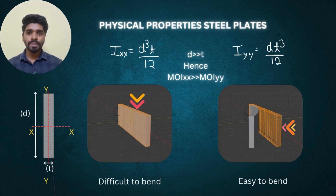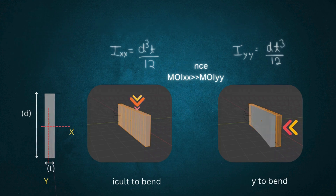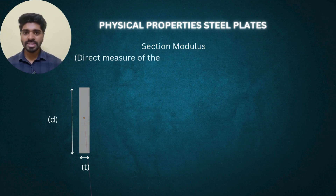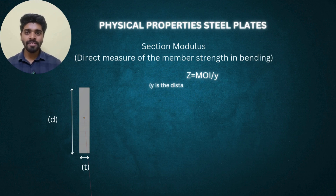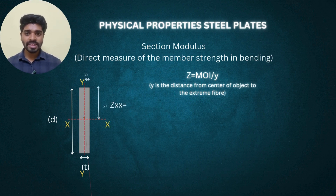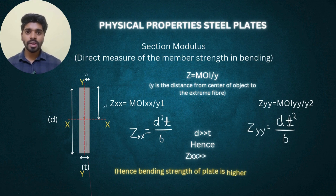If you want to resist bending for a particular load direction, keep the orientation of the plate such that the major axis bending is along that load axis. The next property derived from moment of inertia is section modulus. Section modulus is the direct measure of member strength and equals I/y, where y is the distance to the extreme end of the section. Zxx = d²t/6 and Zyy = t²d/6. The section modulus about the XX axis will be higher than about the YY axis.